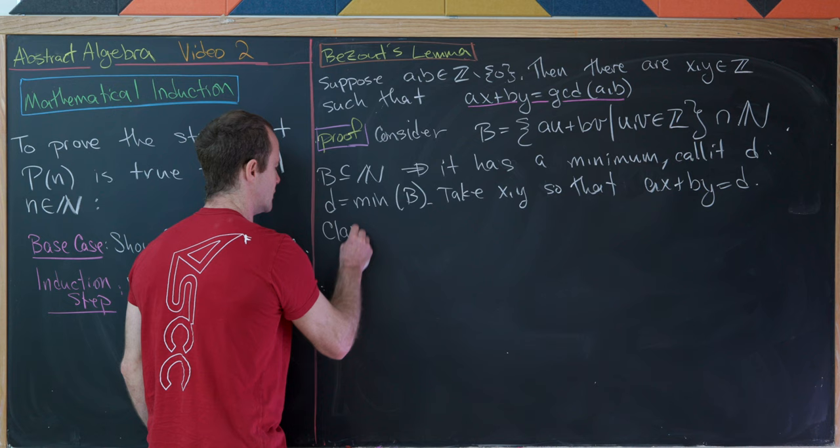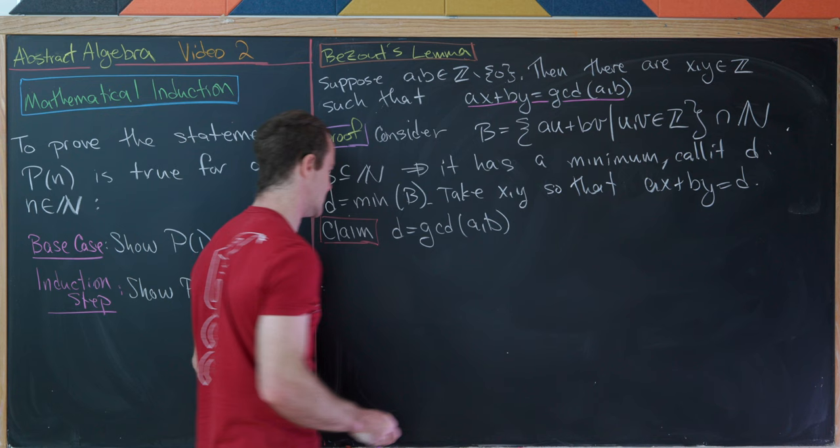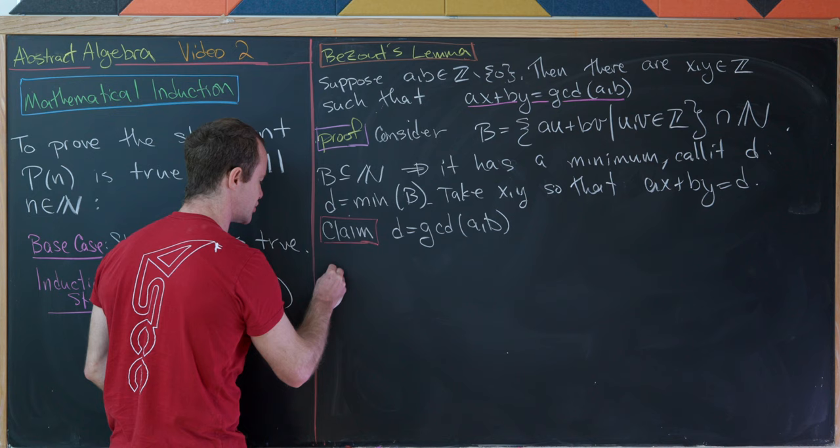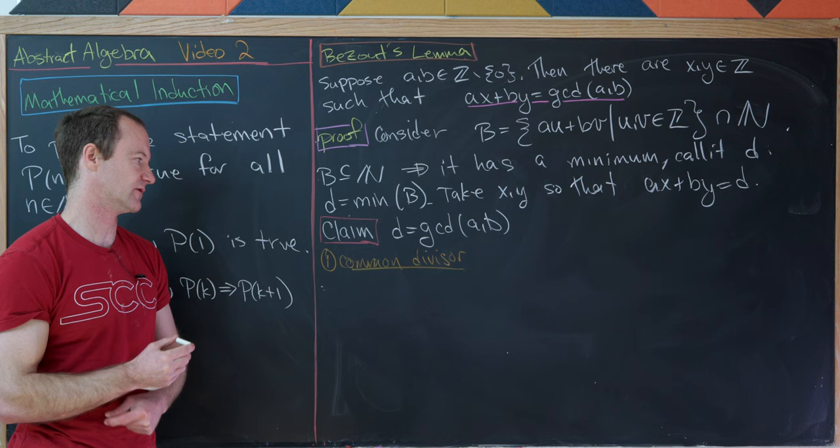Our claim is that D equals the GCD of A and B. To prove this, we first need to show D is a common divisor of A and B, and then show it is the greatest such common divisor.